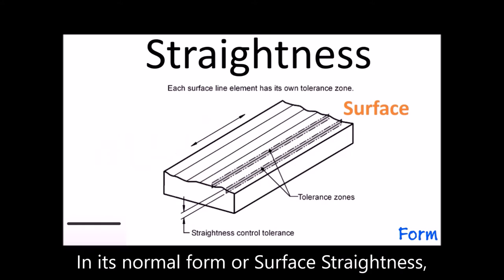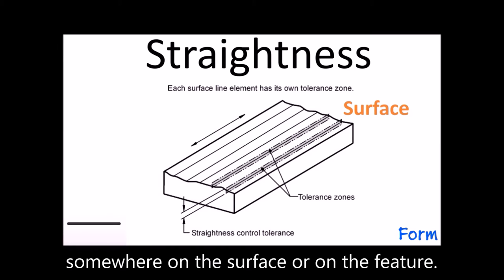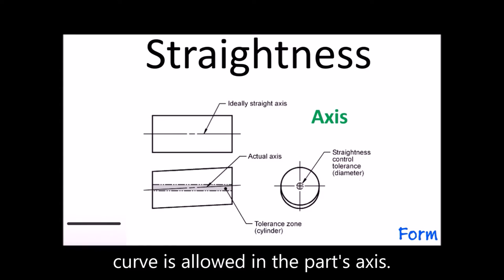In its normal form of surface straightness, it refers to a tolerance that controls the form of line on the surface or on the feature. Axis straightness is a tolerance that controls how much curve is allowed on a part's axis.